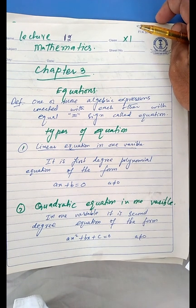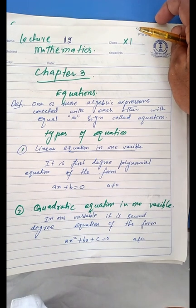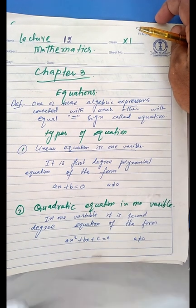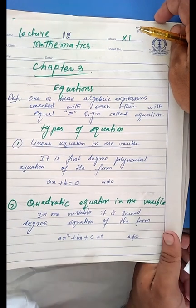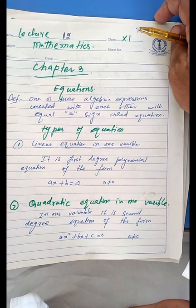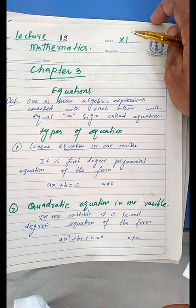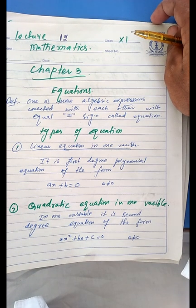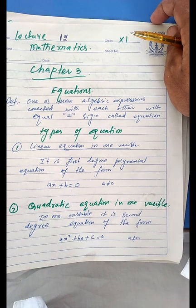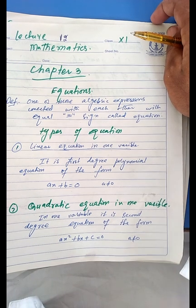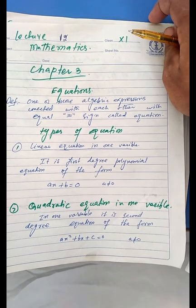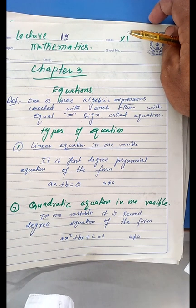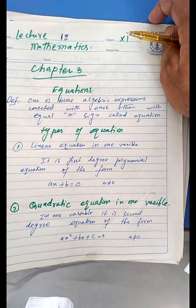An algebraic sentence gives complete meaning in mathematics, whereas an algebraic expression alone does not give complete meaning — that is why it is called an algebraic expression. An equation always shows an equal sign; we call it an equation when there is an equal sign.